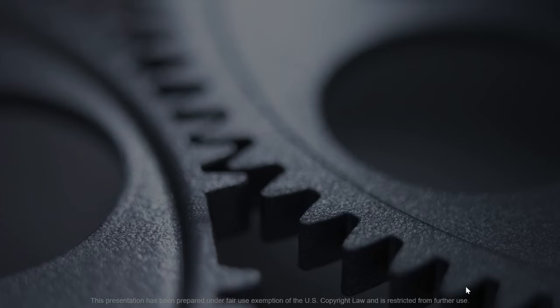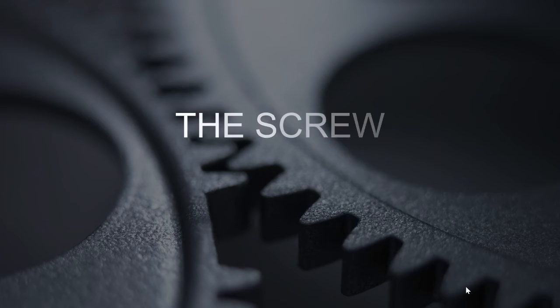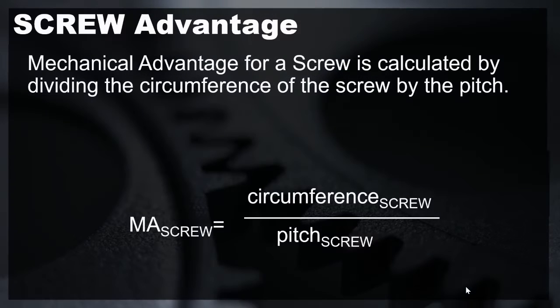In this video, we will learn how to calculate the mechanical advantage of the screw. The mechanical advantage of the screw is calculated by dividing the circumference of the screw by the pitch.